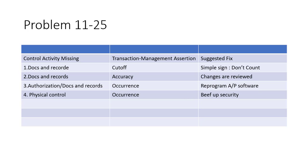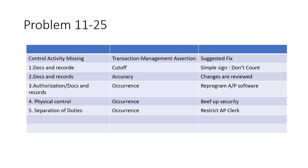Number five: an accounts payable clerk processed payments to himself by adding a fictitious vendor address to the approved vendor master file. This is a case of a clerk overstepping his limits and having payments made to himself. The control missing is a clear separation of duties. Again, you're paying for something you don't have, so that's a problem with occurrence. The fix is to restrict the AP clerk — you need to fire him, hire a new one, and the new one would be restricted.